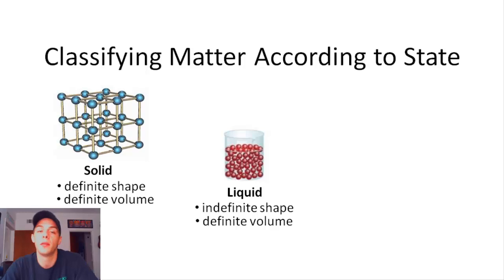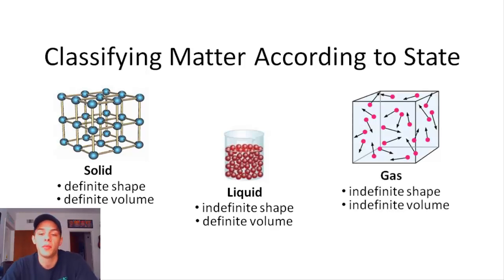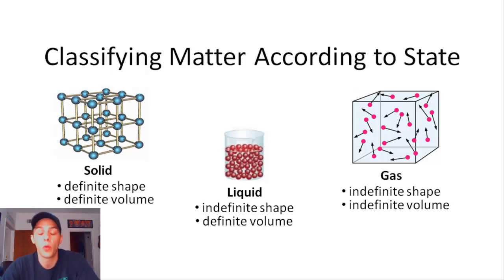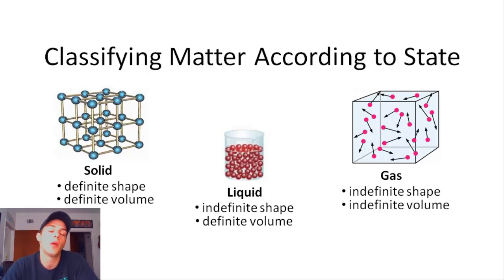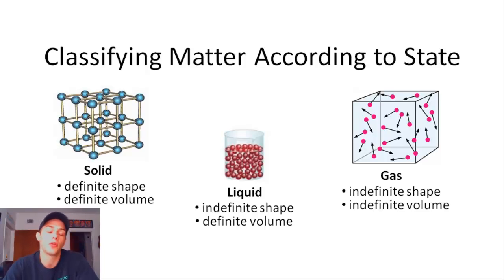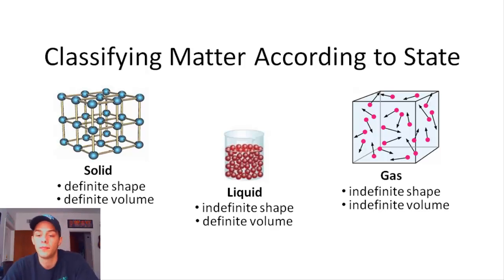The last state of matter is gas. In a sample of gas, the atoms or molecules are very far apart, to the point where gases are compressible — they can be forced to occupy a smaller volume. When you sit on an air mattress, you're compressing the gas, forcing it into a smaller volume. So gases have an indefinite shape like liquids, but they also have an indefinite volume; they take the shape and volume of their containers.